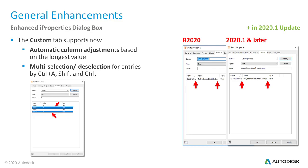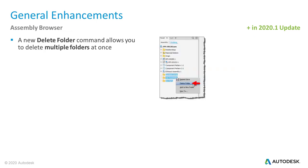Additionally, you can now multi-select or deselect entries for deletion using standard Windows keyboard shortcuts: Control+A, Shift, and Control. Also included in the 2020.1 update is a new delete folder command, which allows you to delete multiple folders at once.